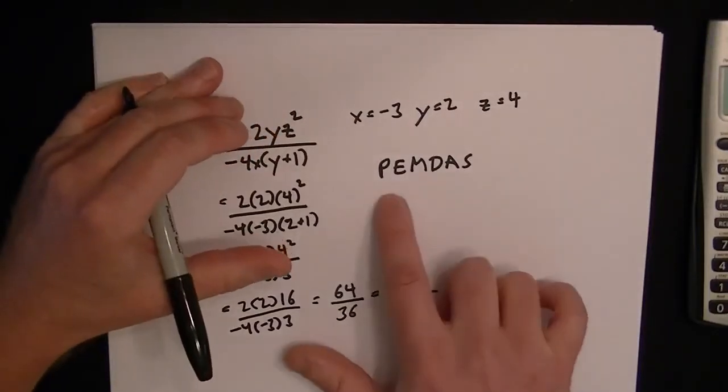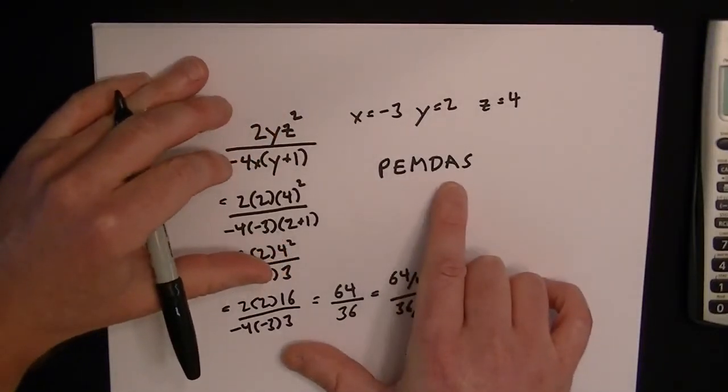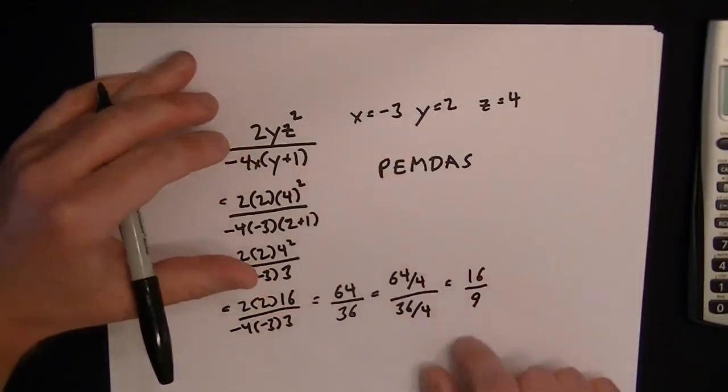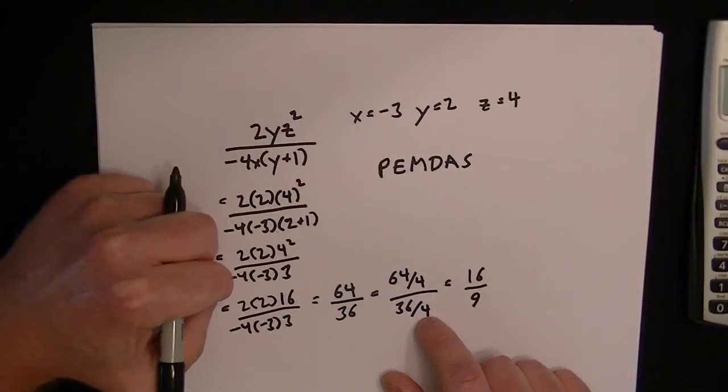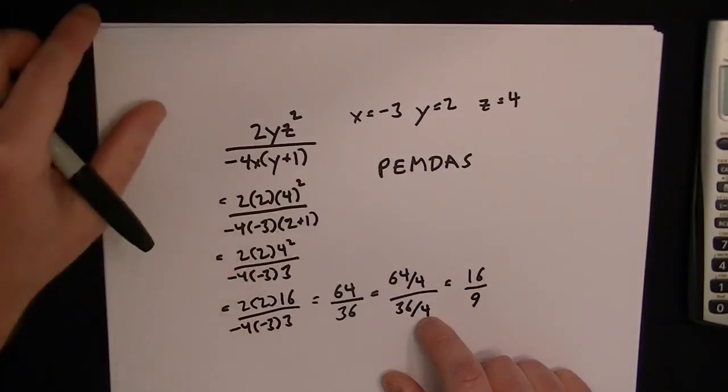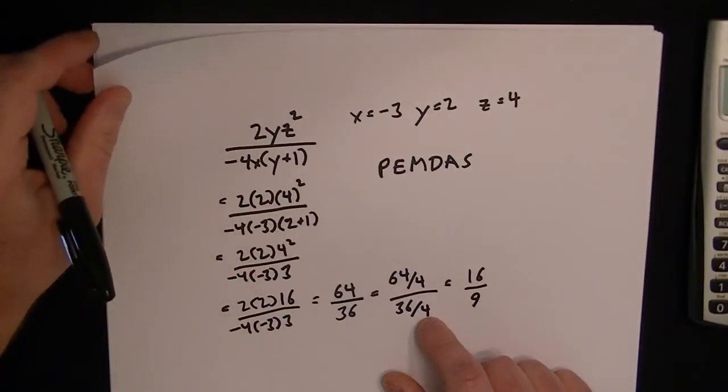So the key here is just to remember this PEMDAS and fill in the variables and make sure you don't make mistakes with the sign. So when you multiply the negatives, you have to make sure that you get a positive. Okay, here we go.